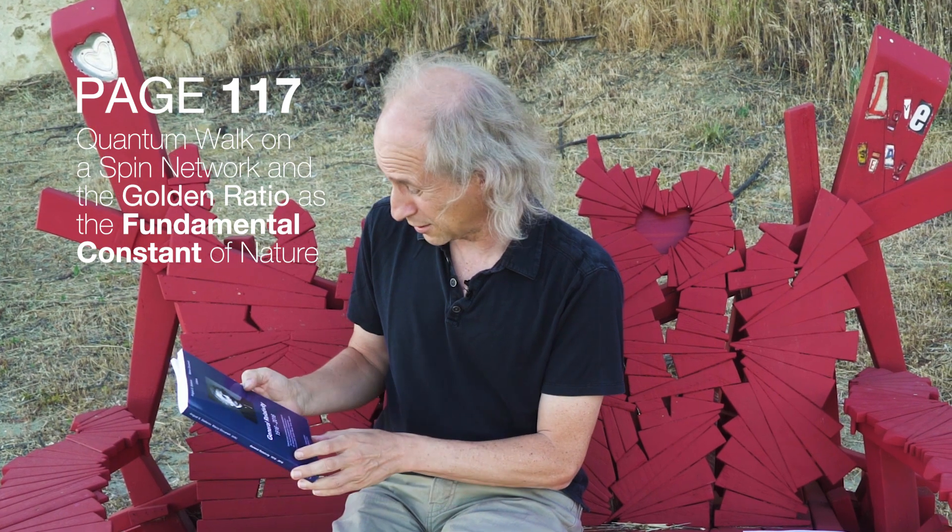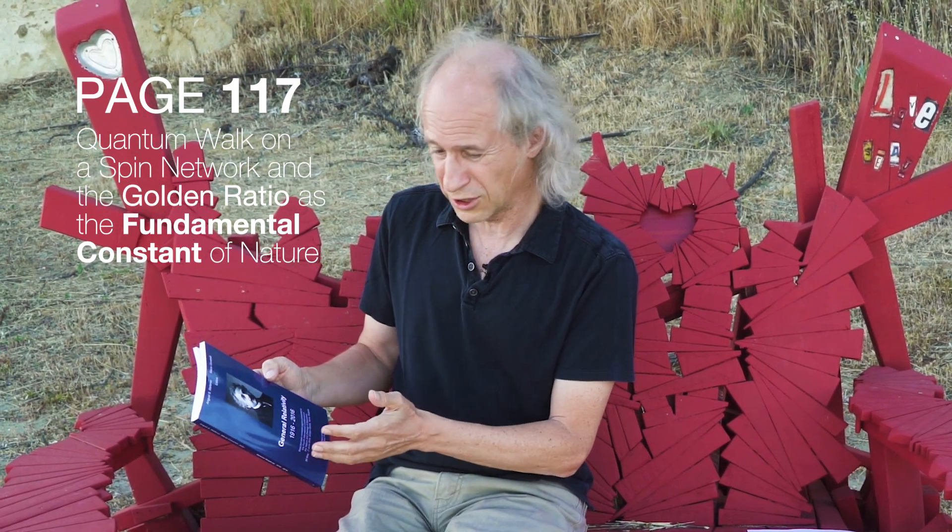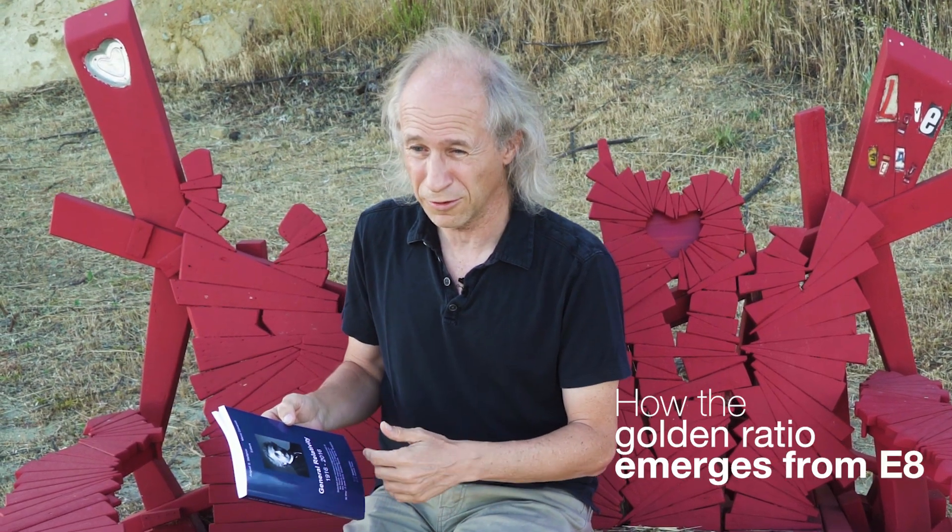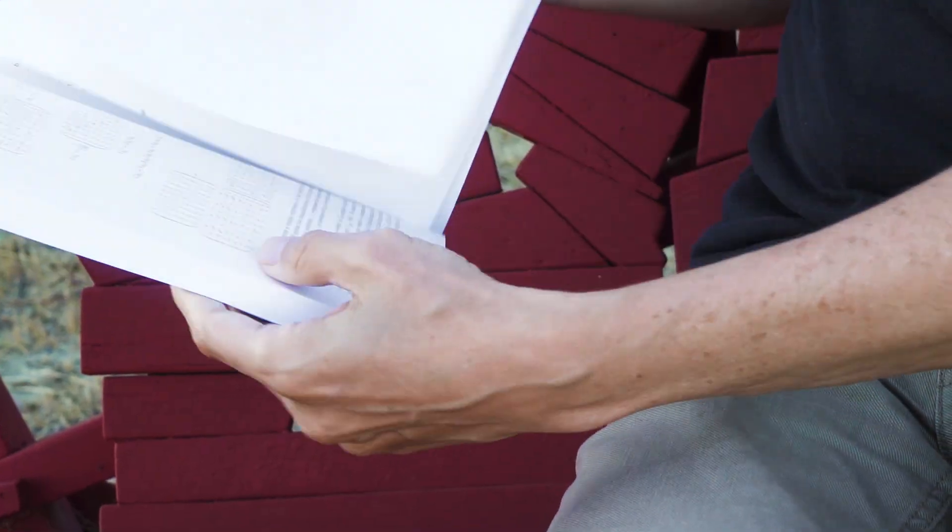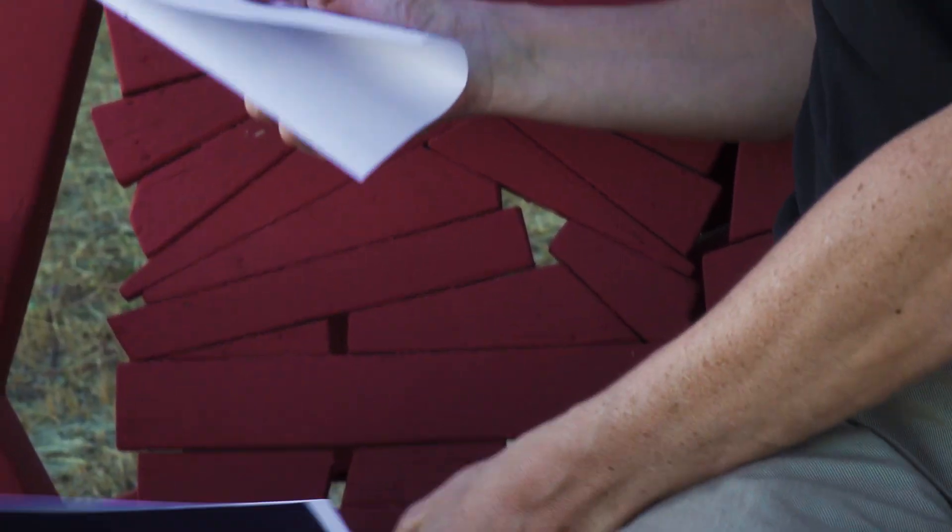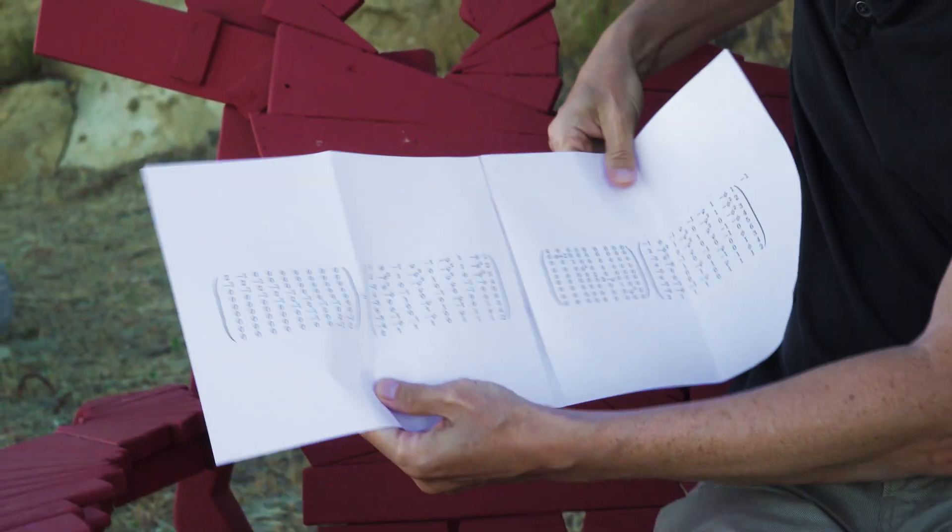It's interesting because there is something very ontological which is showing how the Golden Ratio really emerges from E8. And I can explain this to you. So this is made by some mathematical formulas that I can explain to you, but it is written a little bigger here so you can see this.